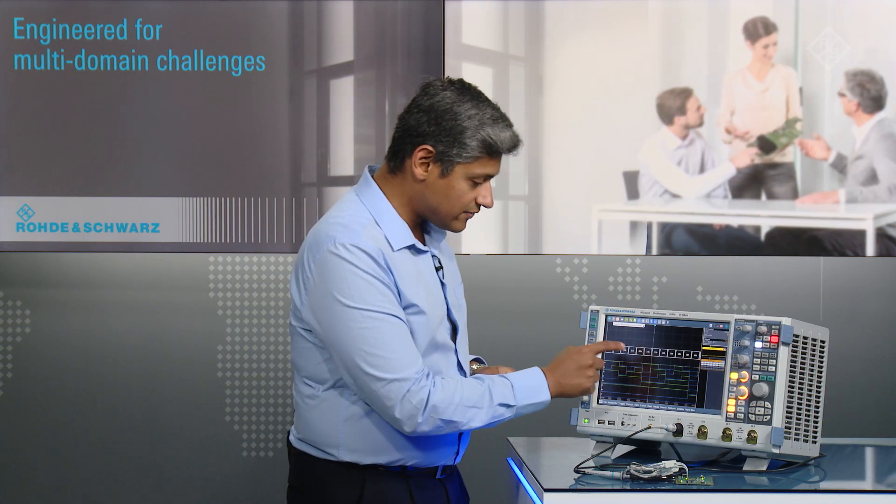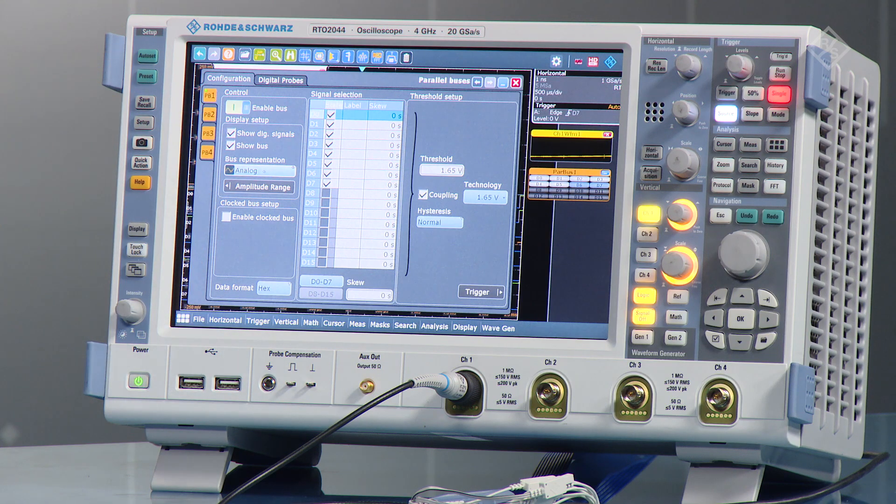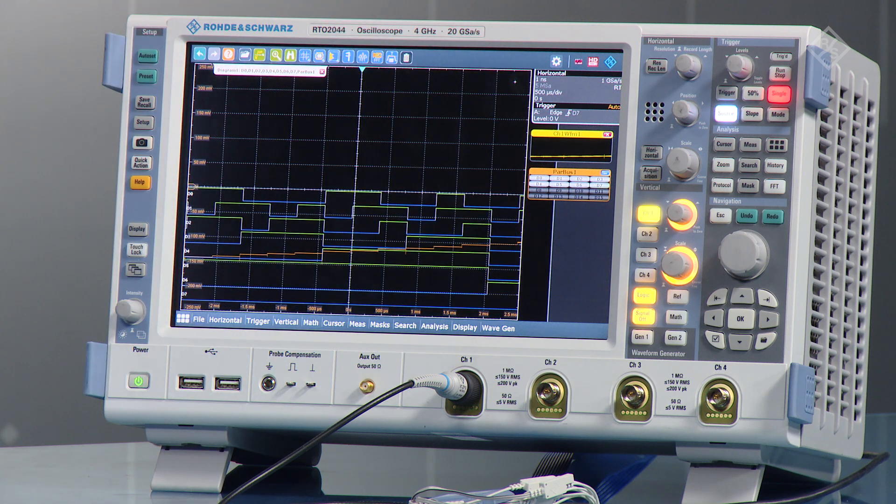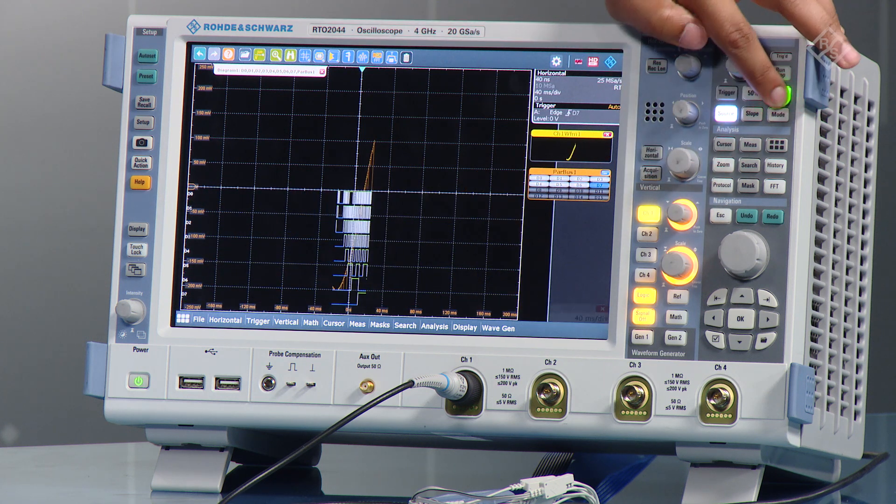But another nice, neater way would be another feature that's available on the mixed signal is the analog trace. So just like you saw a bus view, you can have an analog view of the whole trace.